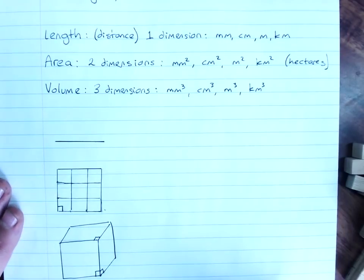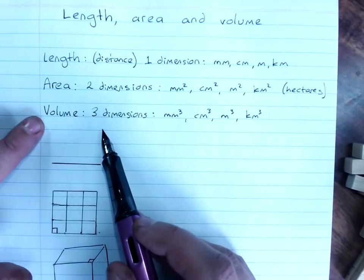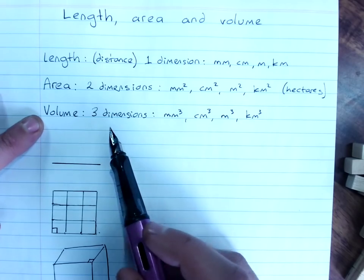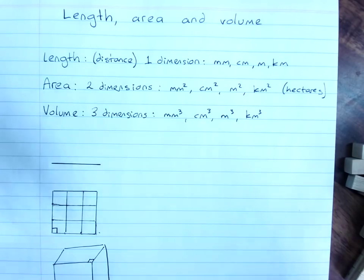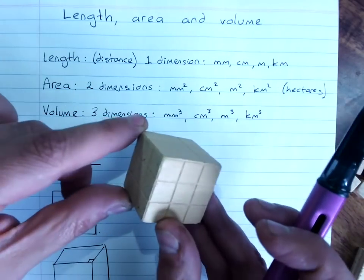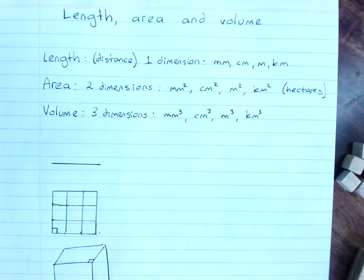So, the whole idea is, how much space does it take up in the three directions that we could go? So, we're going to start learning about volume, and we're measuring how much space a 3D object takes up.